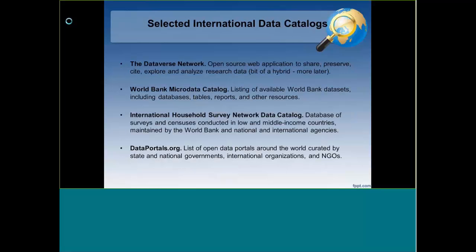There are also sources I'd characterize more as data catalogs — they might not contain the data itself but point to other sources. The middle two, the World Bank Microdata Catalog and the International Household Survey Network Data Catalog, primarily from the World Bank and other international organizations, provide access to household survey data. The Dataverse Network at the top is an enormously important source — it's a bit of a hybrid because it links research data universes and serves an archival purpose, but I use it primarily as a discovery source.